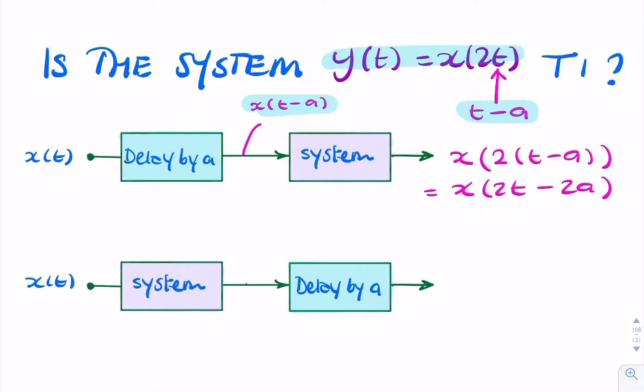But if my signal x of t were to go into my system before applying the delay, then at this point I would simply have x of 2t, because that's what my system does. And if I then delay that by a seconds, I'll have x of 2t delayed by a seconds. So here I've just applied a delay by a.